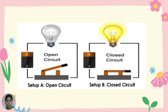Allowing electricity to flow through it. The switches that you see at home are electrical components that can make the circuits of the lights in your homes open or closed. So to turn on lights, you have to close the circuit by pushing the switch on. To turn off the lights, you have to open the circuit again by pushing the switch off.